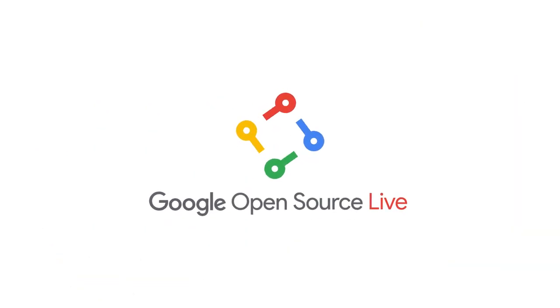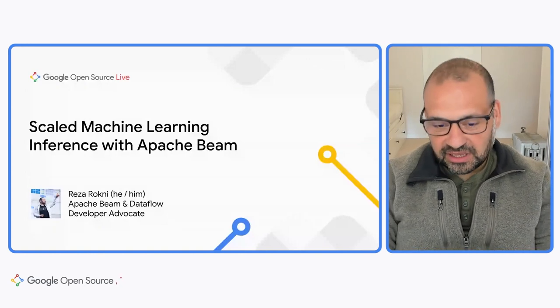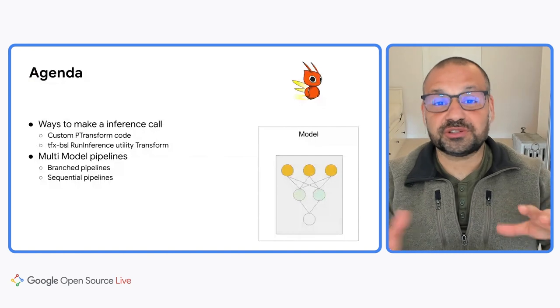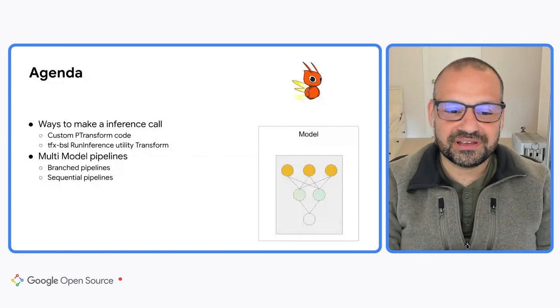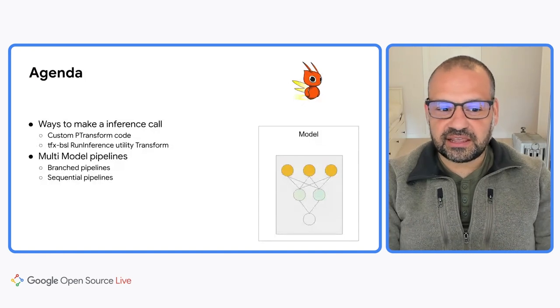Next up, Reza Rockne will be discussing how you can use Beam to run machine learning inference at scale. Over to you, Reza. Hello, everyone. My name is Reza Rockne, and I'm a Google Cloud developer advocate specializing in Apache Beam and Dataflow. Today we're going to talk about scaling machine learning inference with Apache Beam. In order to do this, we need to think about how we actually make a prediction call and put it into an Apache Beam pipeline.